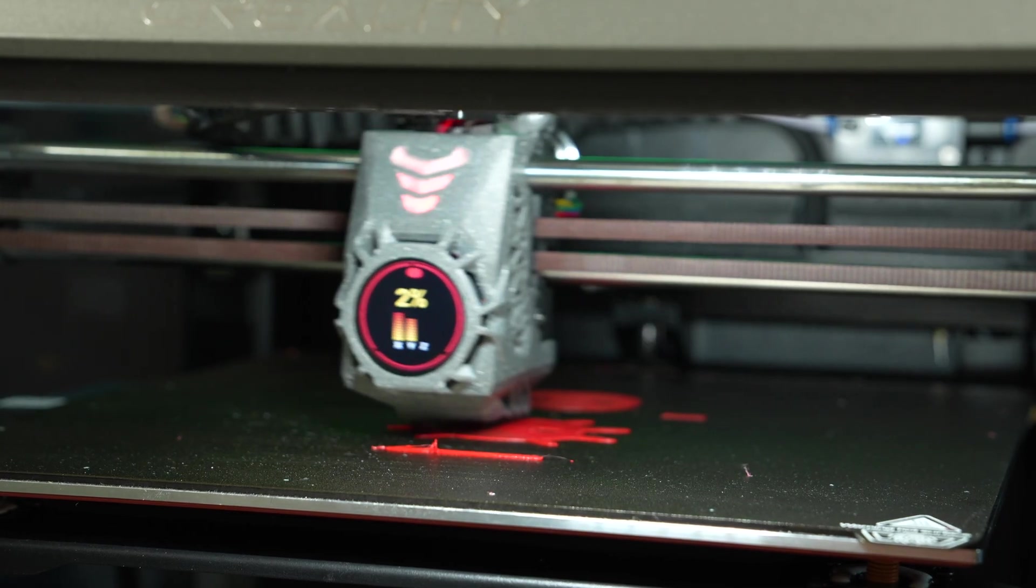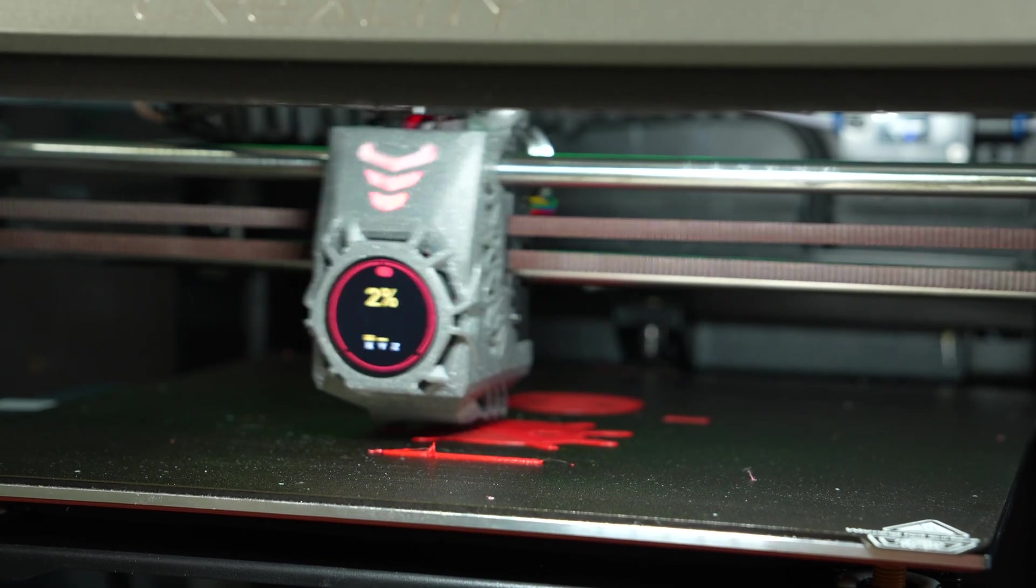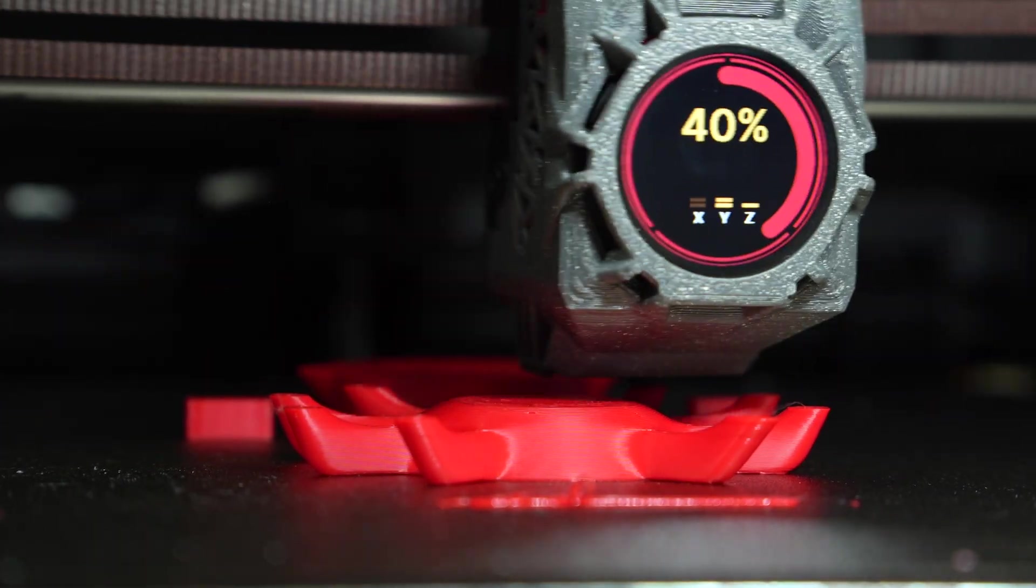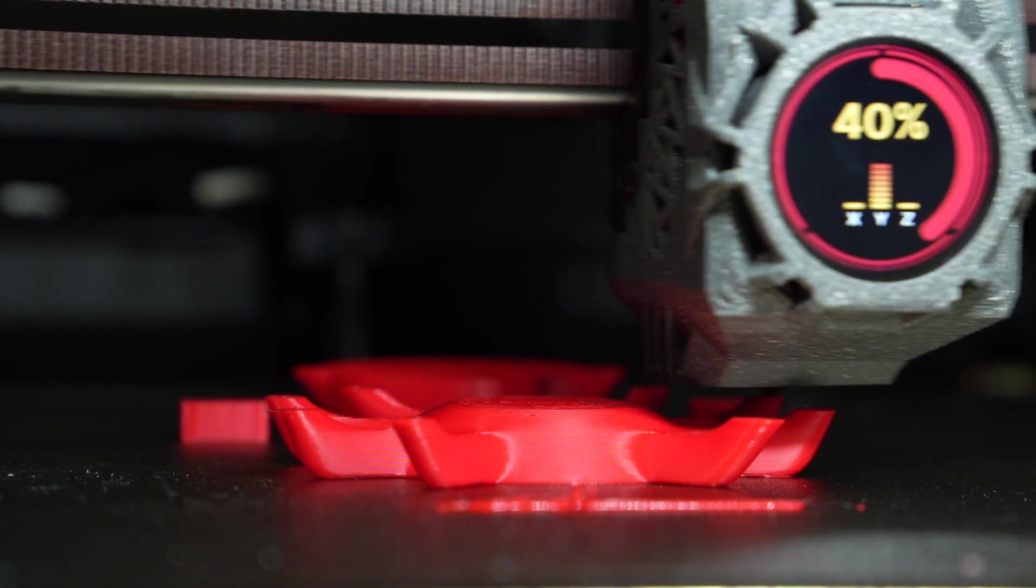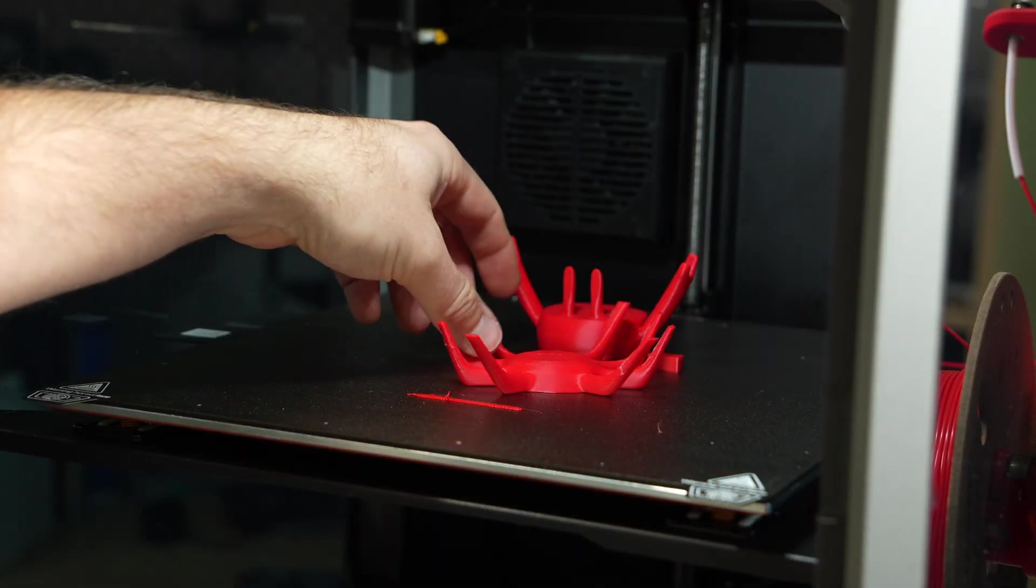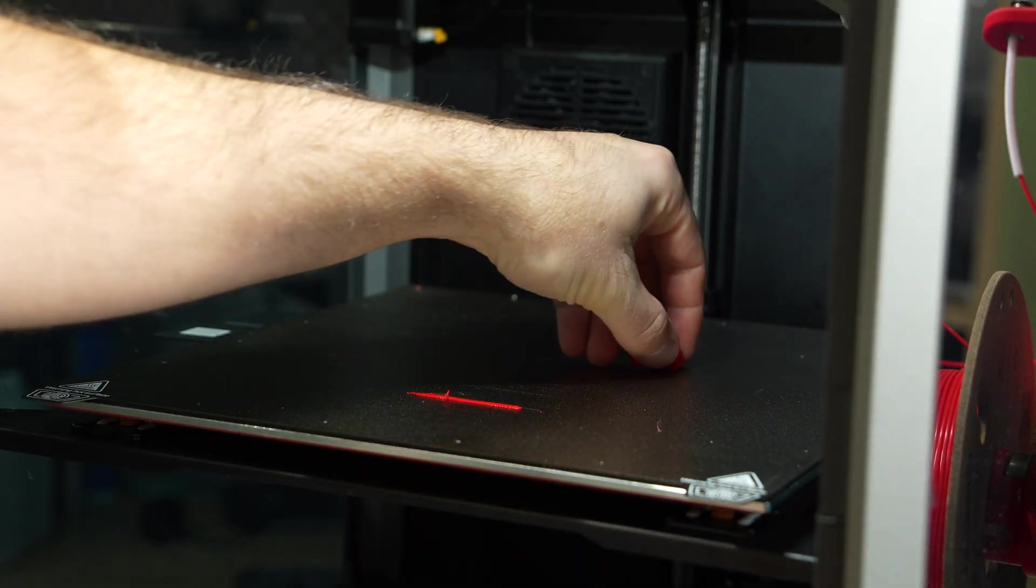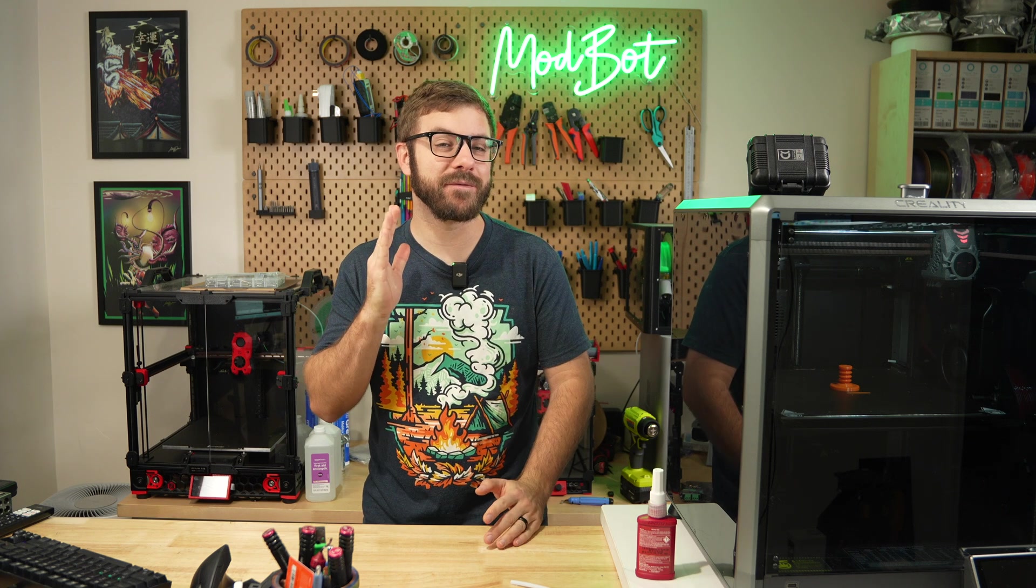I started out with running a multi-part print in Creality's high-speed PLA. I really just wanted to verify the extruder was working correctly and that my initial settings seemed to at least be close to correct. Well, the good news is I had no issues. There was some stringing that I'll need to tune, but the extrusion itself was very consistent.